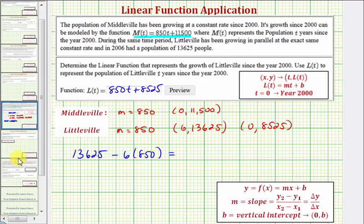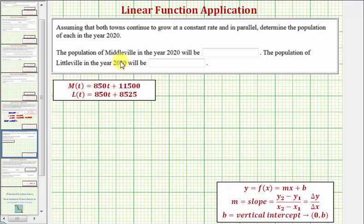Now the second part of this question, we're asked to use our models and find the population for both towns in the year 2020. We need to be a little careful here. We're not going to use 2020 for the value of t. Remember, t = 0 represents the year 2000. And since 2020 is 20 years after the year 2000, we want to find the value of m(20) as well as the value of L(20). If we're ever not sure what value of t to use, we can always take the desired year, in this case 2020, and subtract out the base year, which was the year 2000, or the starting year, which will give us the value of t.